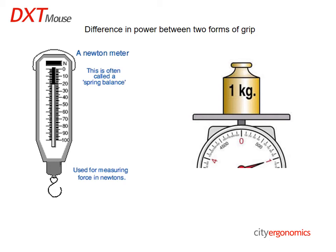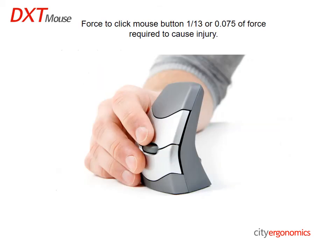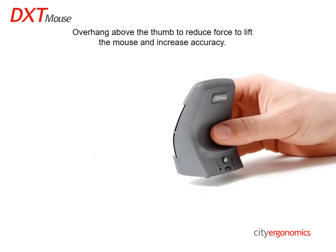To illustrate the difference in power between the two forms of grip, the threshold at which damage appears to occur is 10 newtons, which is just over 1 kilogram. The force to click a mouse button is generally of the order of 75 grams, which is one thirteenth, or 0.075, of the threshold force required to cause damage.